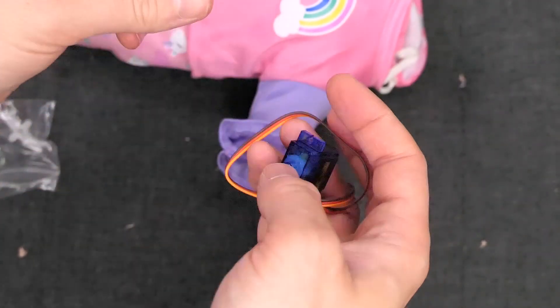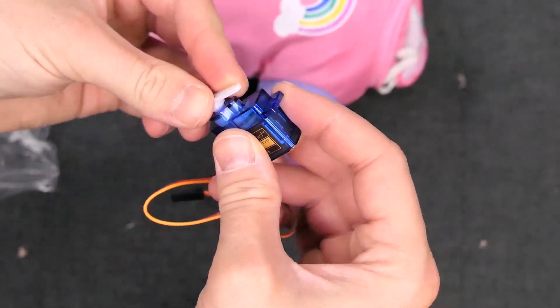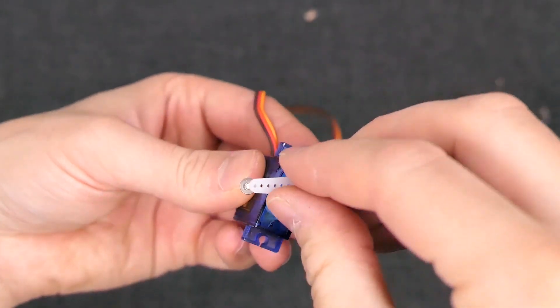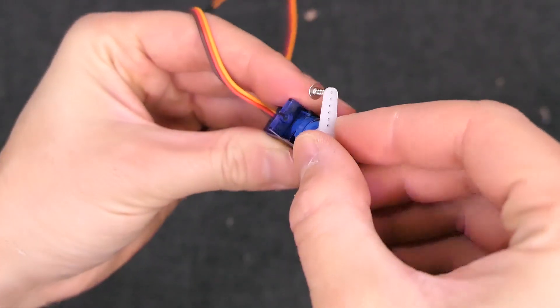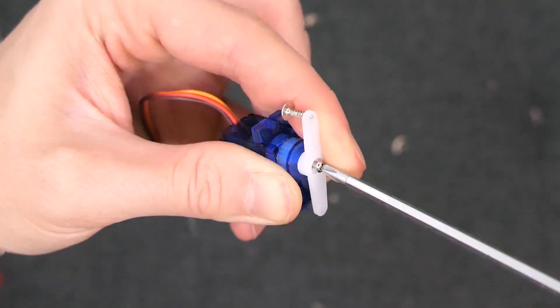Now onto attaching the head. Retrieve the second servo and the double sided plastic arm that came with it. Attach this to the servo and locate the maximum and minimum extents of its rotation. Now centre and screw in place.